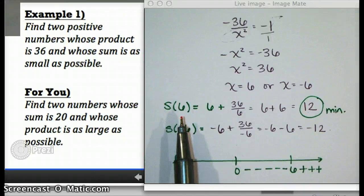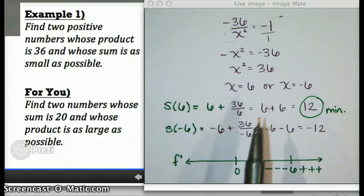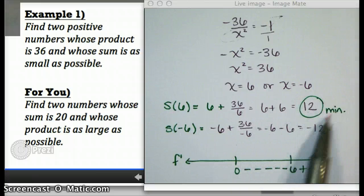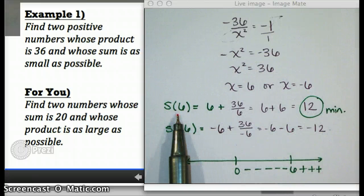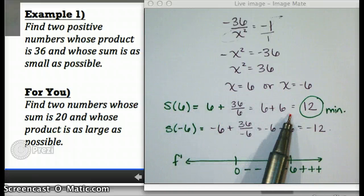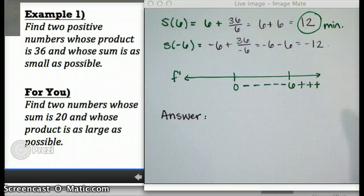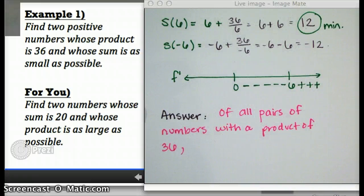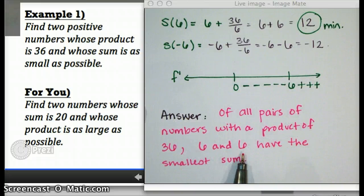We've found an x-value that makes the sum of two numbers as small as possible, creating this minimum. The problem is those two numbers are kind of hidden within that statement. The x-value 6 is one of the numbers, and the other number is actually 6. So our answer should reflect what those two numbers are and what really we've found. You could say something like this: Of all pairs of numbers with a product of 36, that's like the condition, 6 and 6 have the smallest sum. And that's just saying that we've actually found the two numbers that work.